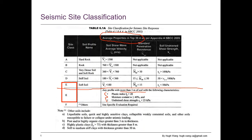A is for hard rock, B for moderate rock, C is for soft rock or very dense soil, D is a stiff soil, E is a soft soil, and F covers others.